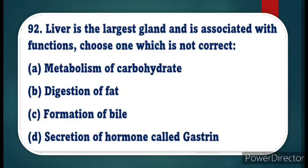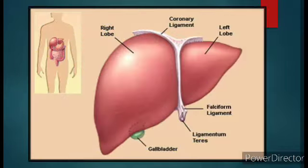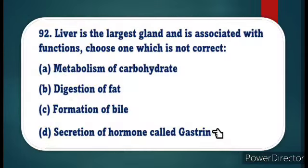Question number 92: Liver is the largest gland and is associated with functions — choose one which is not correct. Among the options, metabolism of carbohydrate, digestion of fat, and formation of bile are functions of the liver. But secretion of the hormone gastrin is not a liver function, because gastrin is secreted by the stomach to increase gastric secretion. So the odd one is secretion of gastrin, and the answer is option D.